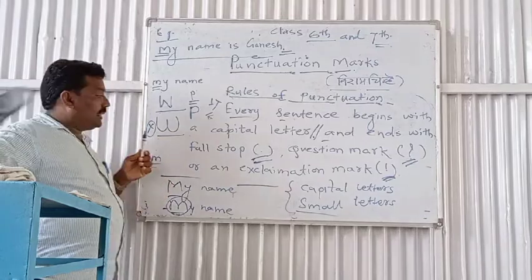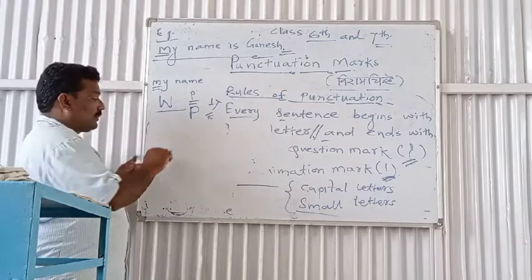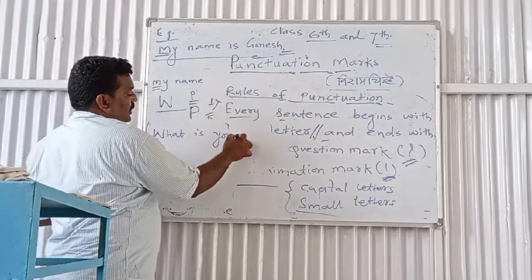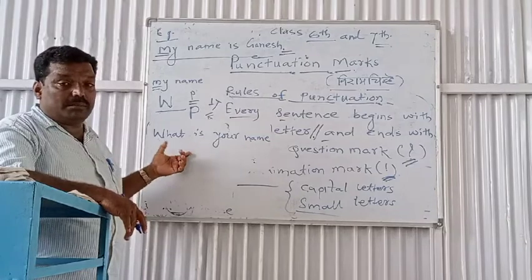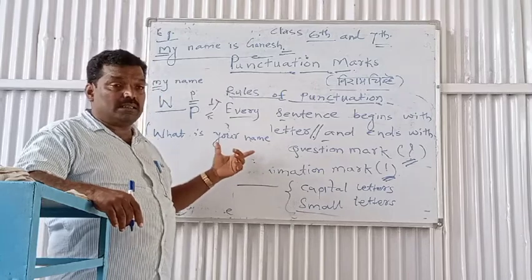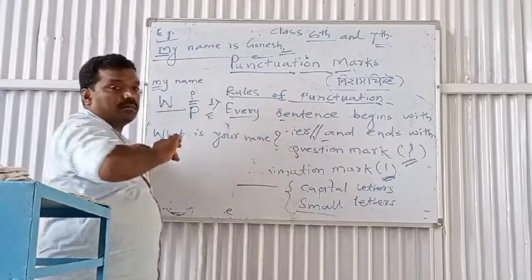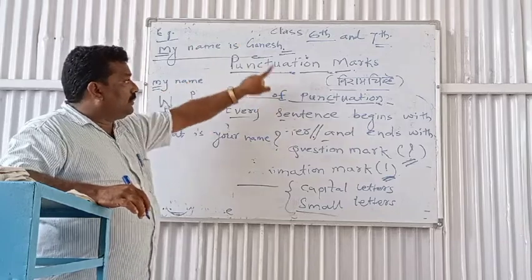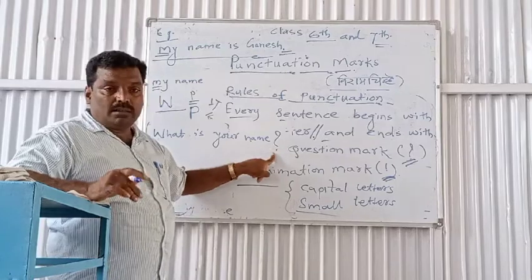See another sentence: 'What is your name?' This is a question. How does the sentence end? This sentence must end with a question mark. The first sentence 'My name is' ends with a full stop. The second sentence 'What is your name?' is a question, so it ends with a question mark.